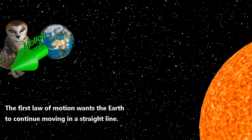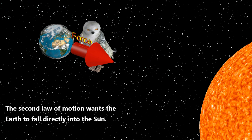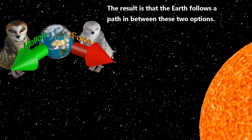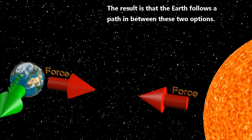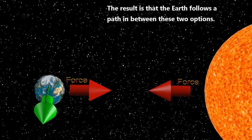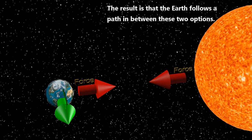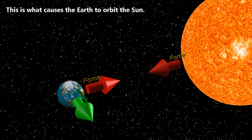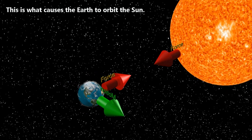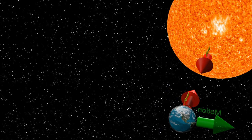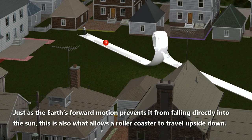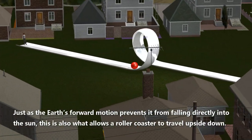The first law of motion wants the Earth to continue moving in a straight line. The second law of motion wants the Earth to fall directly into the Sun. The result is that the Earth follows a path in between these two options. This is what causes the Earth to orbit the Sun. Just as the Earth's forward motion prevents it from falling directly into the Sun, this is also what allows a roller coaster to travel upside down.